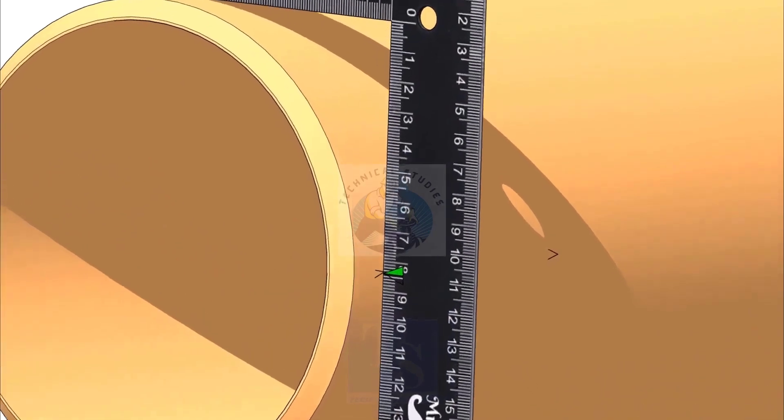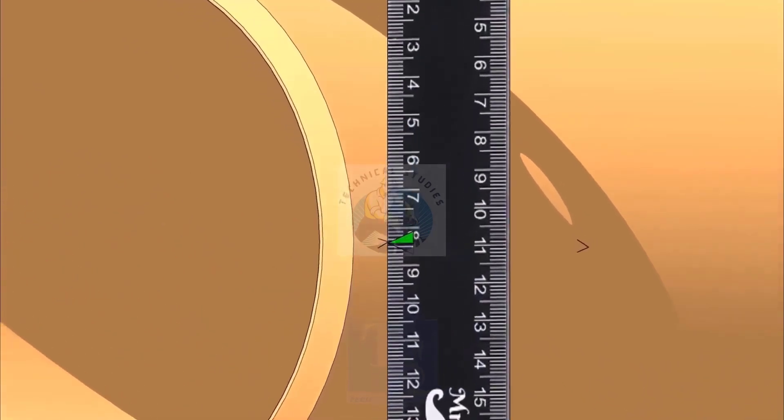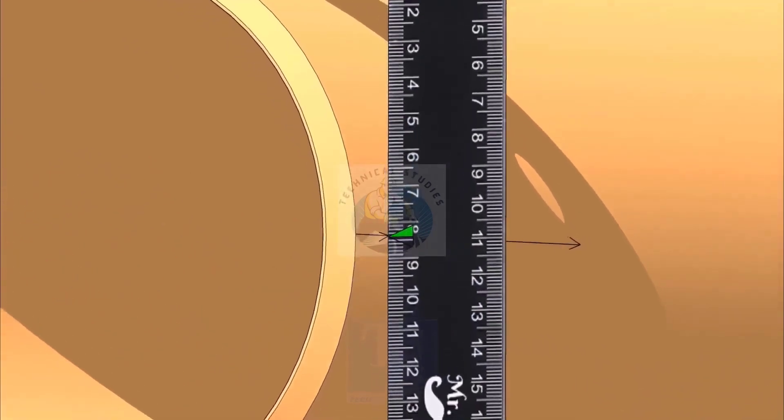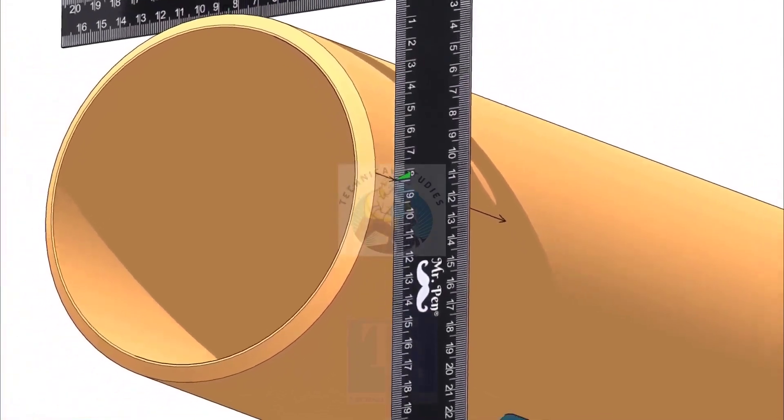Draw arrows on the side of the pipe where the half OD mark touches. Draw a line connecting the arrows.